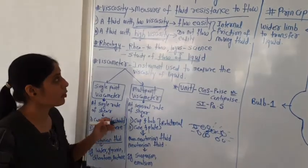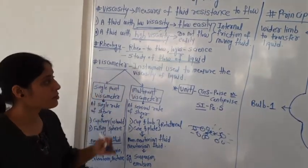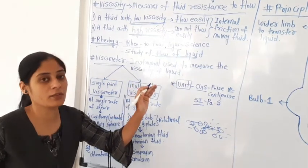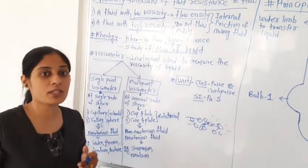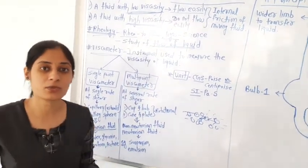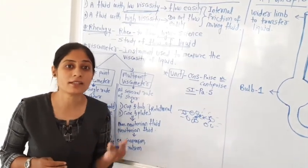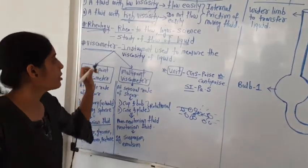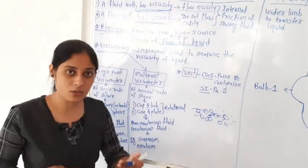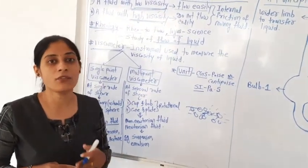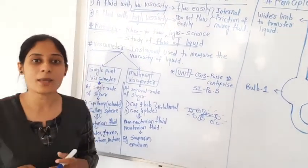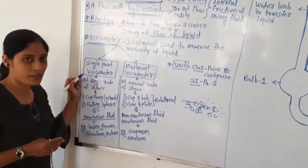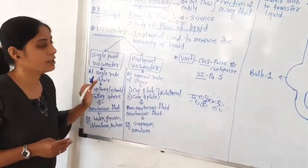The next point is viscometers — the instrument used to measure the viscosity of liquid. For determination of viscosity of liquid, we use an instrument called a viscometer. By using the viscometer, we can determine the viscosity of a liquid sample. There are two types of viscometer: first, single point viscometer, and second, multipoint viscometer.